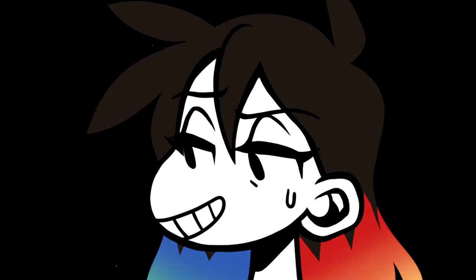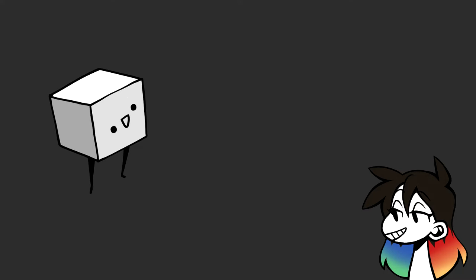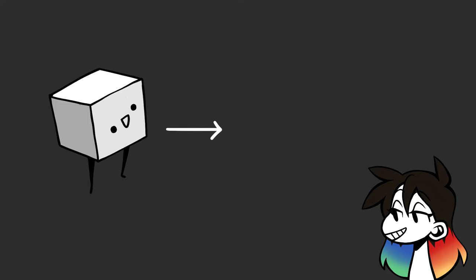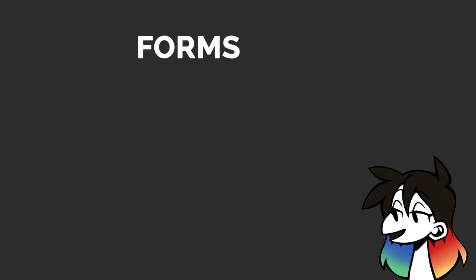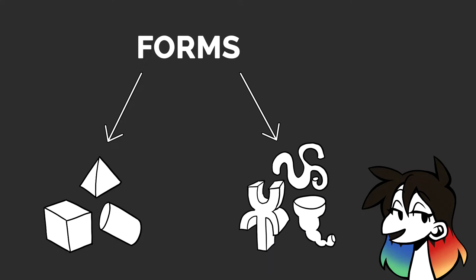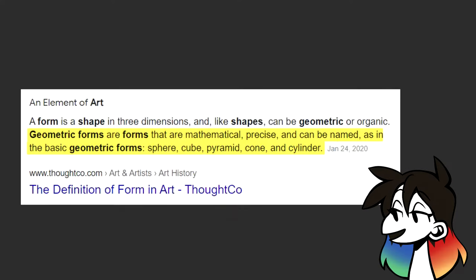I don't even need to expand on that one, but I will anyway, because the video mandates that I must. Like the definition states, form is the three-dimensional counterpart to shape, adding another length of measurement: depth. Just like shape, form can be broken down into two categories — geometric or freeform, which is just another way to say organic. They hold around the same principle as geometric and organic shapes, but let me expand on both.